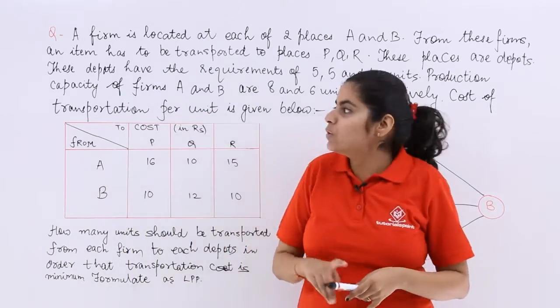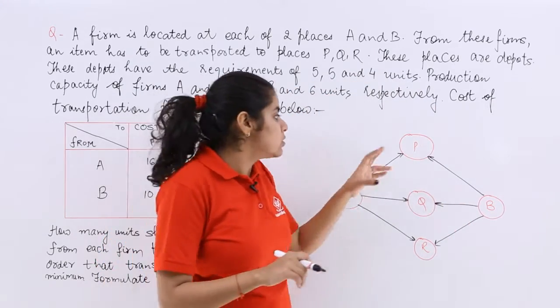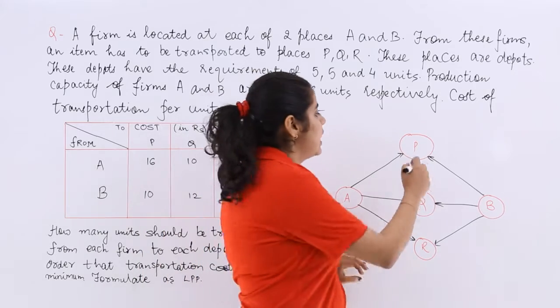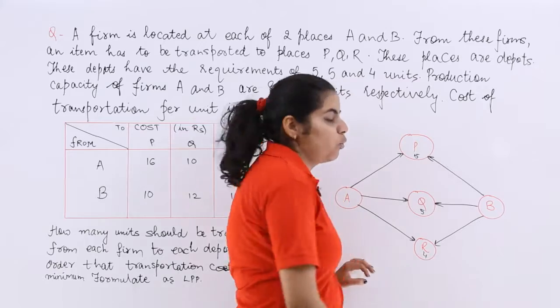Now these places are depots. These depots have the requirements of 5, 5 and 4 units. So these places are called depots and they have the requirement of 5, 5, 4 units.